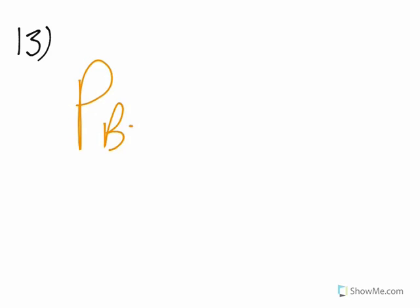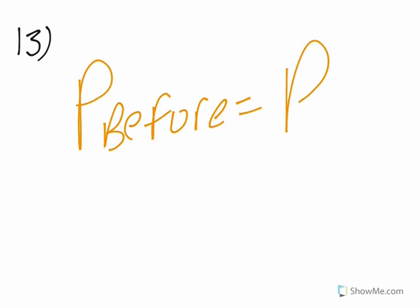Conservation of momentum means momentum before is the same as momentum after. The momentum before a collision should be the same as the momentum after the collision.